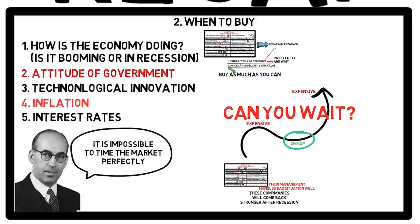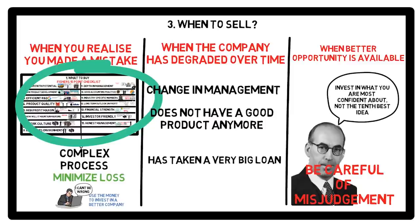If it is available at an expensive price, you must still buy a small quantity and wait for it to be available at a lesser price in future. Fisher says that it is humanly impossible to accurately time the market assessing all the economic factors at a particular time. A recession is the best time to buy these businesses because most of the stocks are cheap during this time. You must sell a stock if you realize you made a mistake in assessing the stock in the 15-point checklist or made a bad decision in a hurry, or over time the company has degraded and fails to qualify most of the points in your checklist which it once did, and last but not the least, if you find a better investment opportunity.